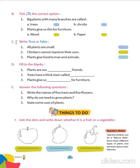Now come to Exercise C — true or false. All plants are small — that is false. Climbers cannot stand on their own — that is true. Plants give food to man and animals — that is true.